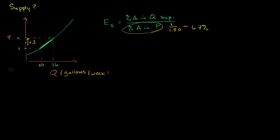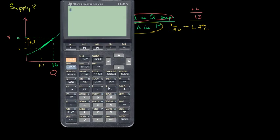We have approximately a 67% change in price, using the midpoint as our base. Now the percent change in quantity supplied: we went from 10 to 16, so we have plus 6, over the midpoint between 10 and 16, which is 13. 6 over 13 — let's get a calculator out — gives us 46%.